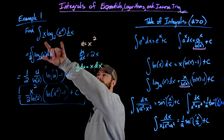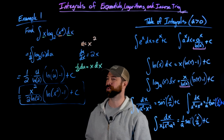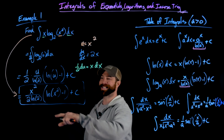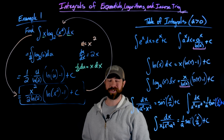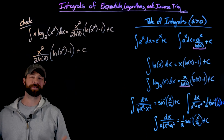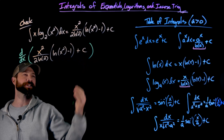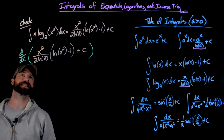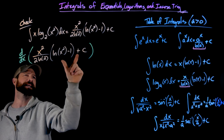To verify, I want to differentiate our result and confirm we get back the original function — a check using the fundamental theorem of calculus. Taking the derivative, we use the product rule on x squared and the natural log of x squared minus 1. The constant 1/(2 natural log 2) pulls out front, the constant term c goes to zero, and we get 1/(2 ln 2) times [2x times (ln(x²) − 1) plus x² times (1/x²) times 2x].